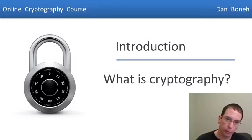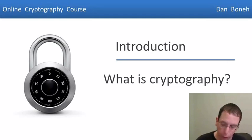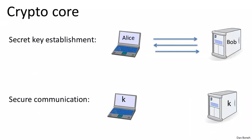Before we start with the technical material, I want to give you a quick overview of what cryptography is about and the different areas of cryptography. The core of cryptography is secure communication, which essentially consists of two parts: the first is secure key establishment, and then how do we communicate securely once we have a shared key.